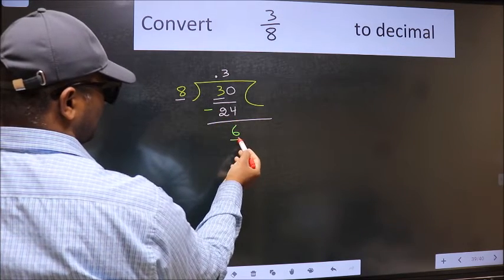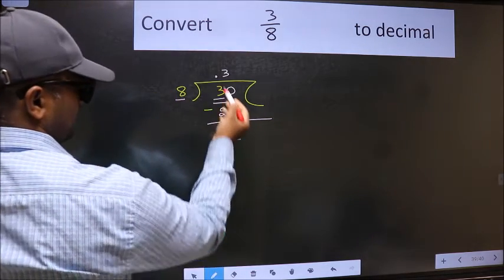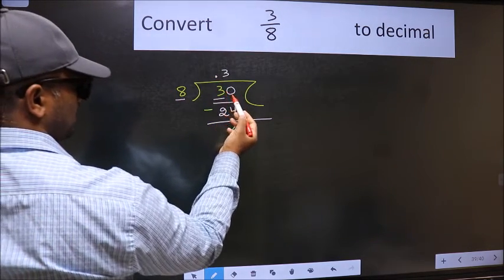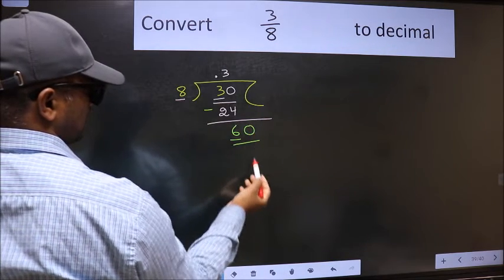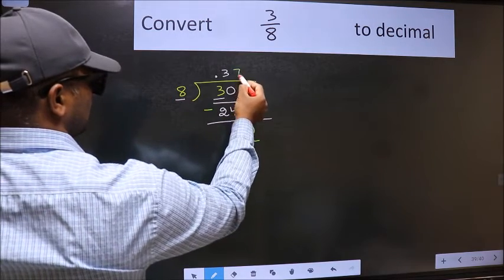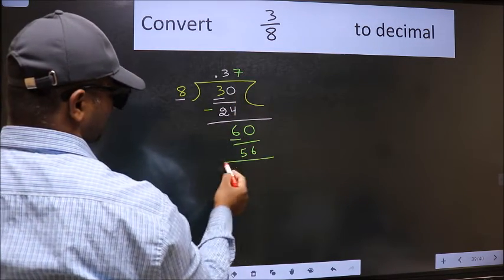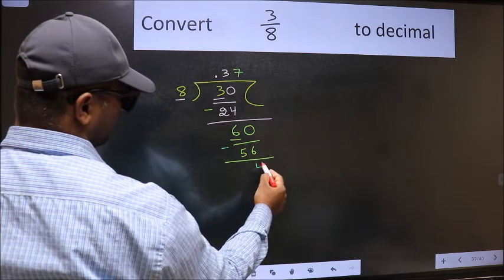Now here we have 6 and here 8. 6 is smaller than 8. We already have the decimal, so directly take 0. So, 60. A number close to 60 in the 8 table is 8 times 7, which is 56. Now we should subtract. We get 4.